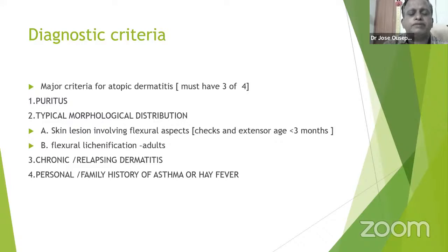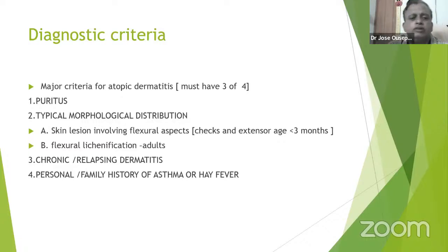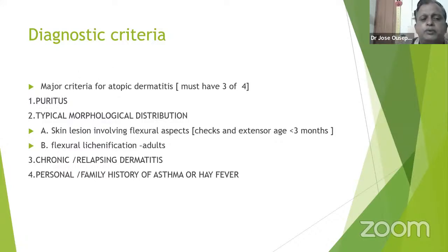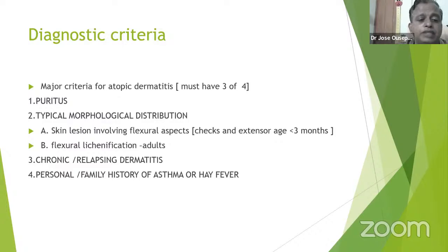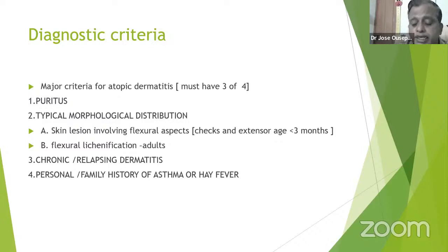For diagnostic criteria of Atopic Dermatitis, the major criteria require three out of four features: pruritus, typical morphological distribution (skin lesions involving extensor surfaces and cheeks in children under three months, or flexural lichenification in adults), chronic relapsing pruritic lesions, and personal or family history of asthma, atopy, or hay fever. Three out of four factors must be present clinically to diagnose Atopic Dermatitis.